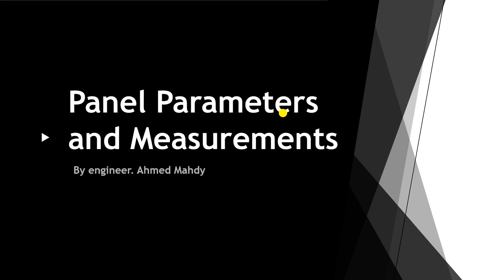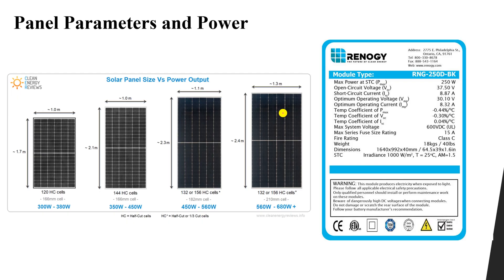In this lesson we are going to talk about some of the panel parameters and how to do the open circuit and short circuit measurements, or how to get the connections of the different testers involving the panels. First, the panel parameters and power. If you look at any panel, you will find that it has a datasheet. This datasheet shows us the different parameters of the panel.